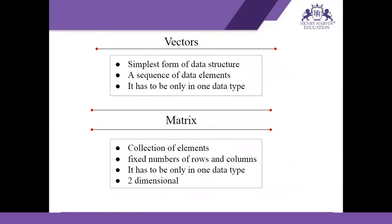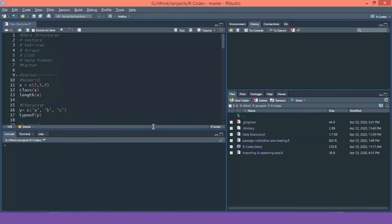Vectors are the simplest form of data structures. A vector is a series of data elements combined in the form of a sequence. A vector should contain only one data type — either numeric, integer, character, logical, or complex. Now let's go to R and start writing the code.